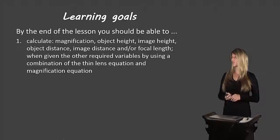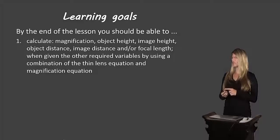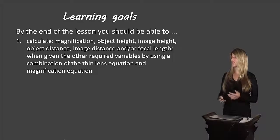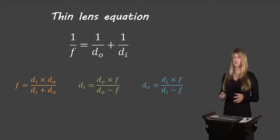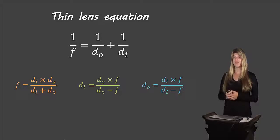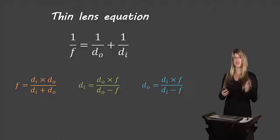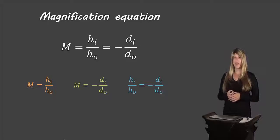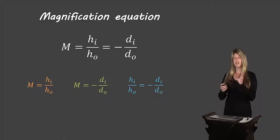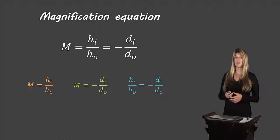We have one learning goal today: to calculate magnification, object height, image height, object distance, image distance, or focal length when given the other required variables by using a combination of the thin lens equation and the magnification equation. Let's take a quick look at the thin lens equation — in white is the original form, and the colored equations below show the different versions to solve for isolated variables. Then here we have the magnification equation, the original version in white at the top, and the other versions shown in the colored equations below.